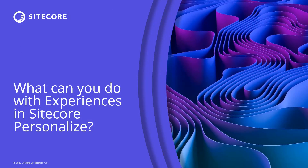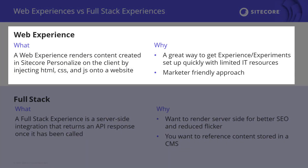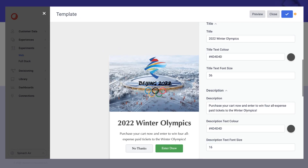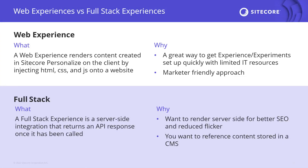Before going into deeper details, let me give a quick introduction to what can be done with Sitecore experiences. For the experience types available, firstly we have web experiences, which is a total client-side integration where you can inject HTML, CSS, and JavaScript on top of your rendered content. This is a great way to set up experiences quickly with limited IT resources — it's marketer-friendly. You don't configure API calls yourself; you just need to complete the basic integration steps of Sitecore CDP and marketers can easily inject personalized content or components on the website.